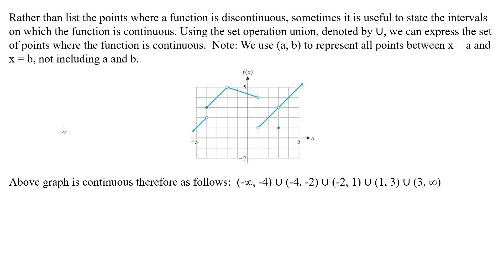So rather than list points where a function is actually discontinuous, sometimes it's more useful to state the intervals on where the function is continuous. And then we use basically set operation with unions denoted by the u. I'm sure everybody's used that before in classes. And then we express a set of points where the function is continuous. Note, we always use the parentheses to represent all points between x equals a and x equals b, but that don't include a and b.